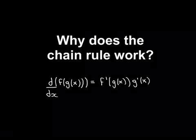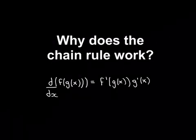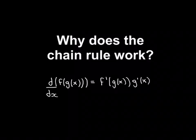In this video, we want to discuss why the chain rule of differentiation works. The chain rule says that if you want to differentiate something of the form f of g of x, the answer is f prime of g of x multiplied by g prime of x. We're going to see why this is true.